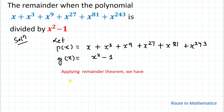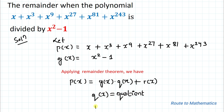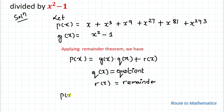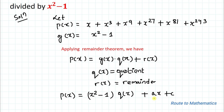In the next step we are going to apply the remainder theorem. The remainder theorem states: p(x) = g(x) · q(x) + r(x), where q(x) is our quotient and r(x) is the remainder. So we can write p(x) = (x² - 1) · q(x) + r(x).